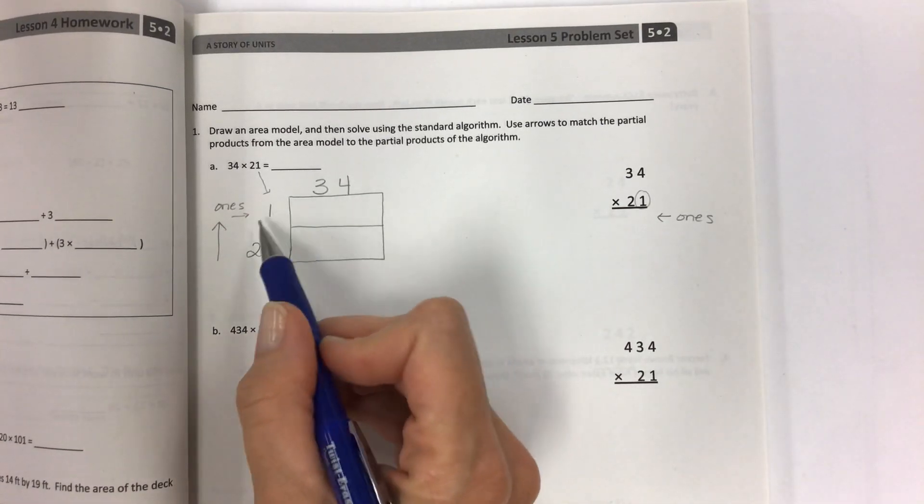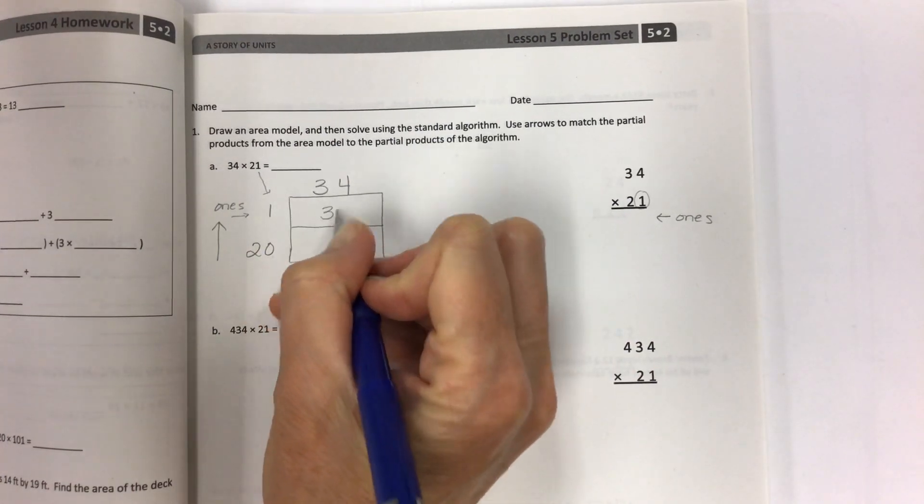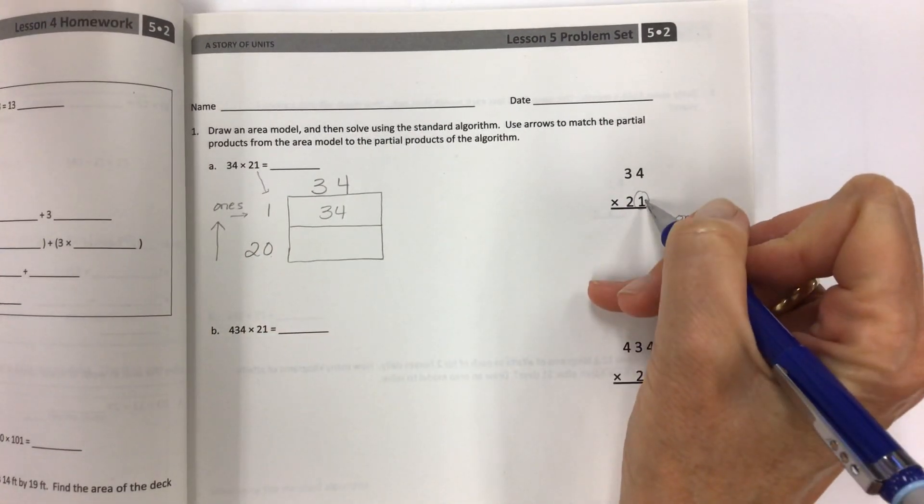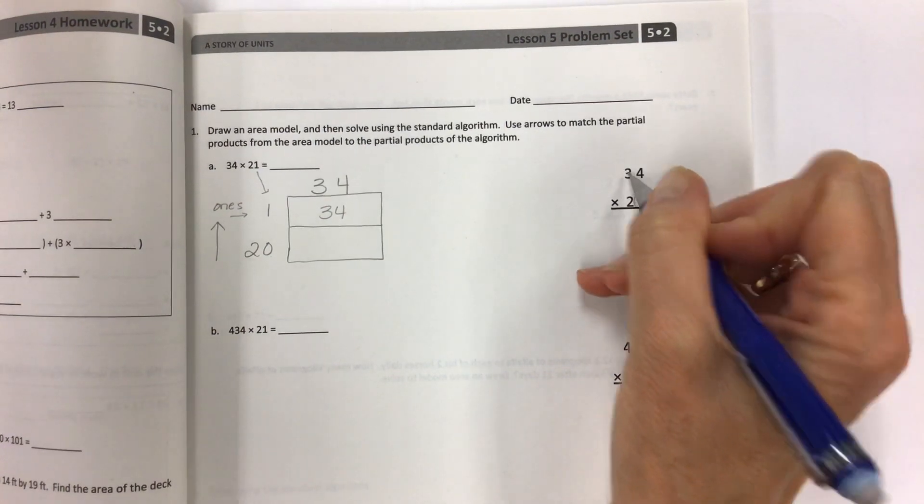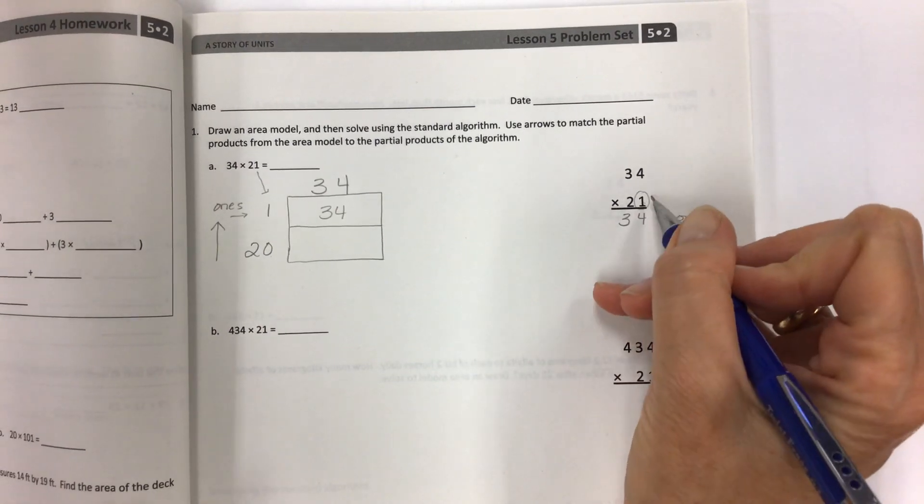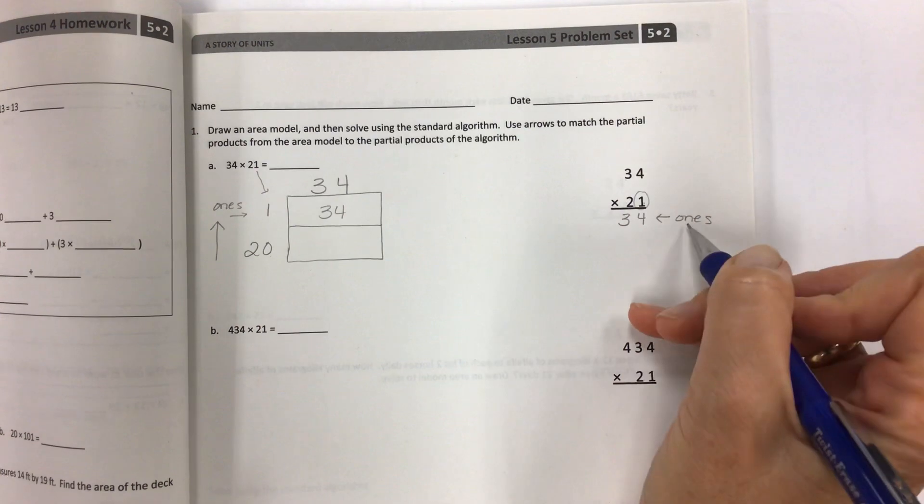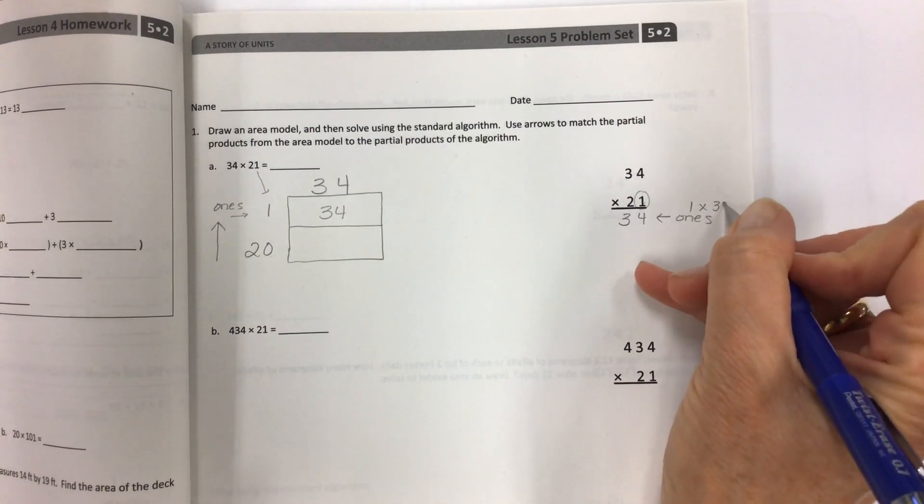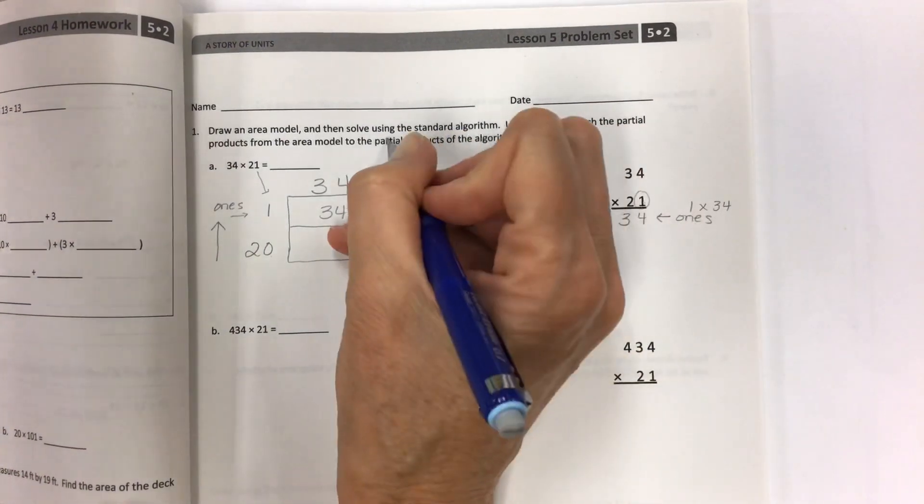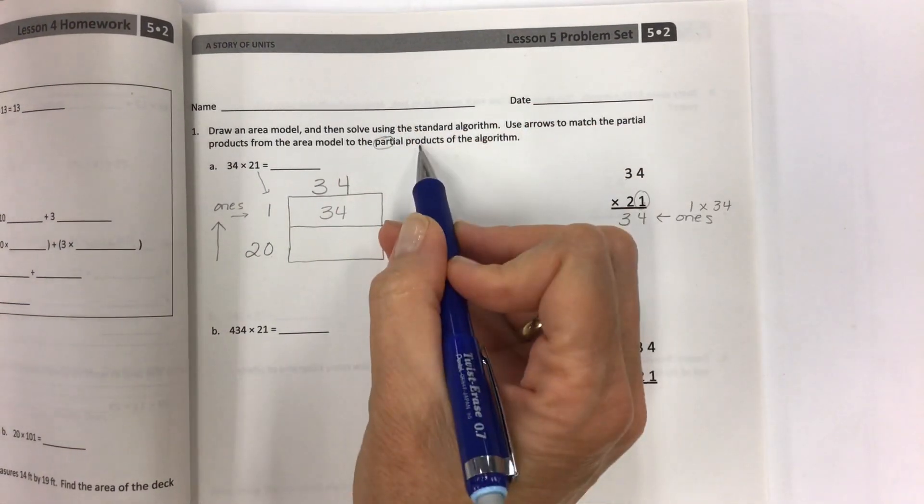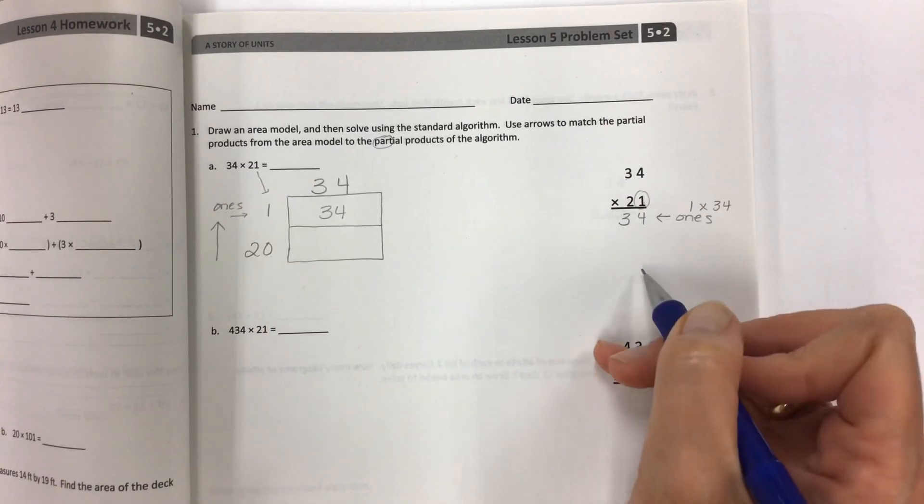Now we're going to take these factors and multiply them. So 34 times 1 is 34. Easy peasy. Look at how it connects with the standard algorithm: 1 times 4 is 4, 1 times 3 is 3. So here we're taking 1 times 34. That's what this is. It's 1 times 34, and the partial product goes here. What does partial mean? It means part. Part of the product. Part of the product that is going to be added up where we will get the full product down below.